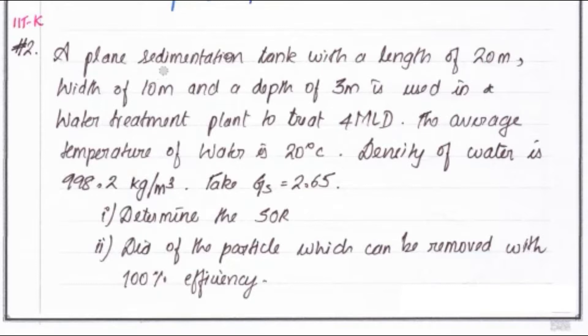The problem is a plain sedimentation tank with a length of 20 meter, width of 10 meter and a depth of 3 meter is used in a water treatment plant to treat 4 million liters per day. The average temperature of water is 20 degrees Celsius. Density of water is 998.2 kg per meter cube. Take GS specific gravity of solids 2.65.